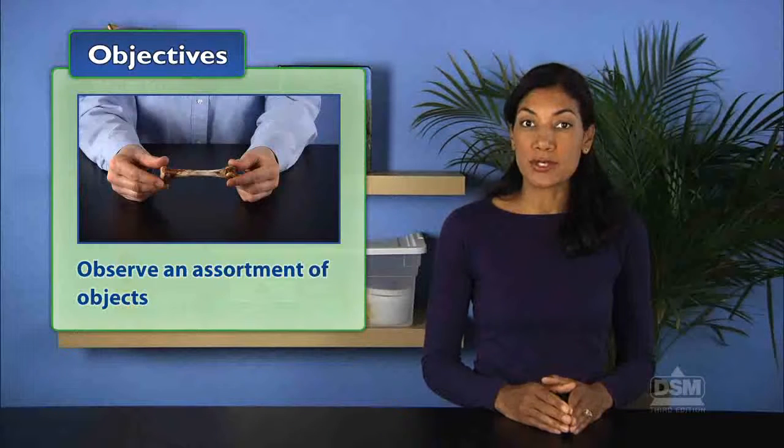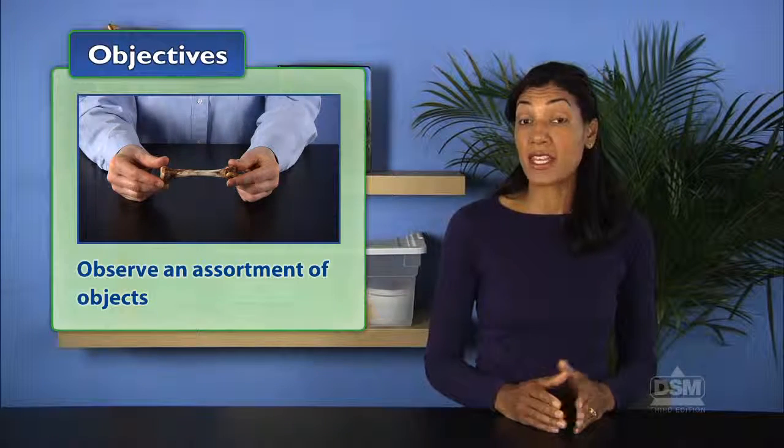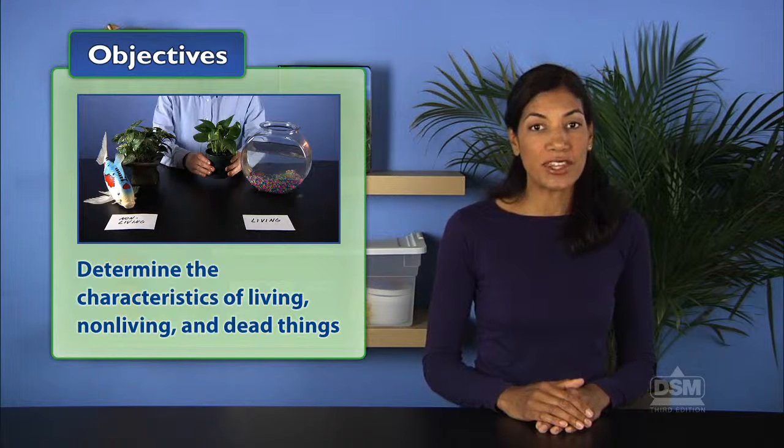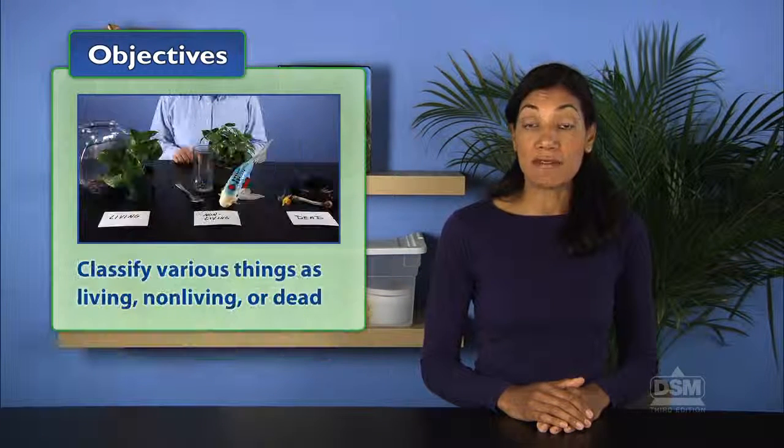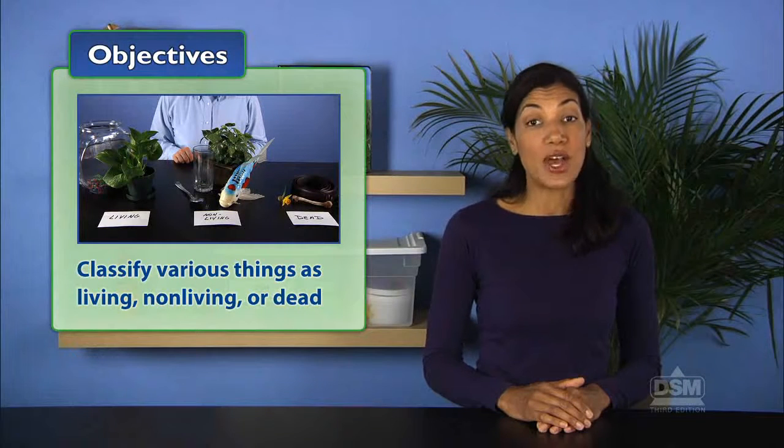They first observe an assortment of objects, then determine the characteristics of living, nonliving, and dead things. Finally, students classify various things as living, nonliving, or dead.